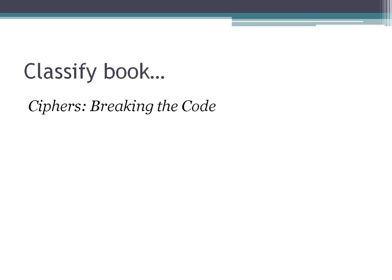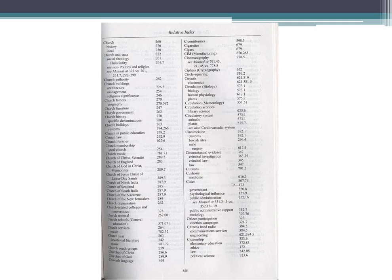It's easier to grasp this when we do an example. Let's pretend we have a book called 'Ciphers: Breaking the Code.' Whether you're using the print version or WebDewey, you would start by going to the relative index. In the print version, the relative index is at the back. We'll look up 'ciphers' in the relative index and see that it's part of cryptography, directing us towards the number 652, which is for processes of written communication. It tells us that interdisciplinary works on cryptography are classed here.